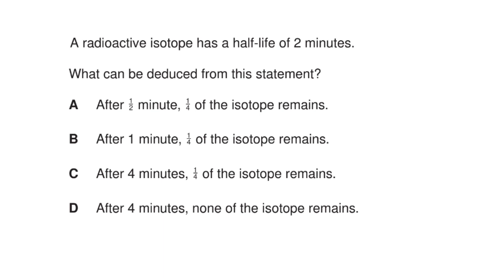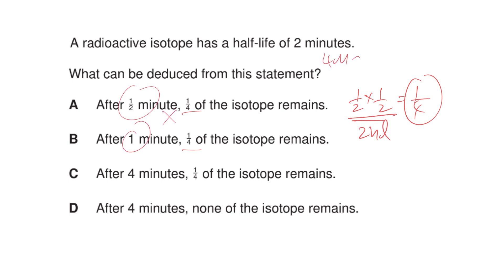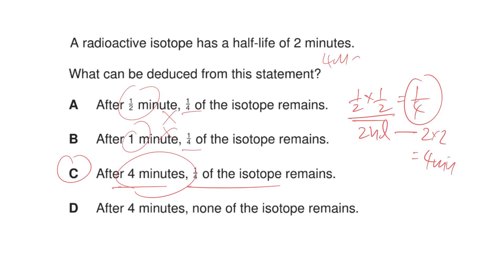Question 6 involves a radioactive isotope with a half-life of 2 minutes. If one quarter of the isotope remains, that means 1/2 × 1/2 = 1/4, so two half-lives have passed. The duration is 2 × 2 = 4 minutes. Statements suggesting otherwise are wrong. In four minutes, a quarter of the isotope remains. The answer is C.